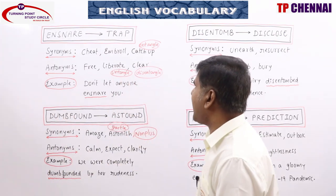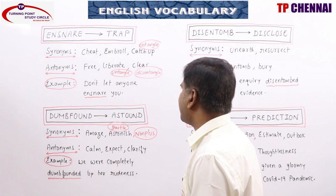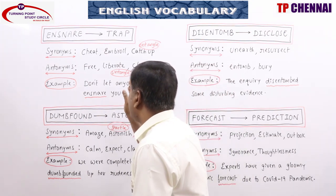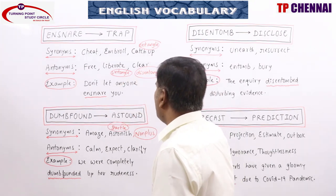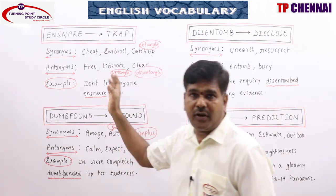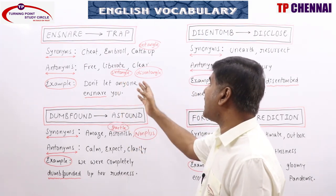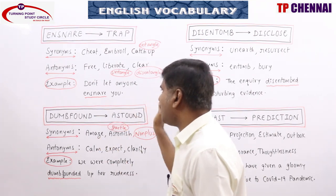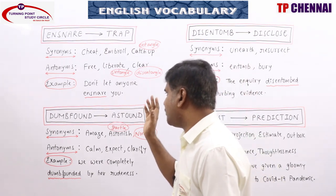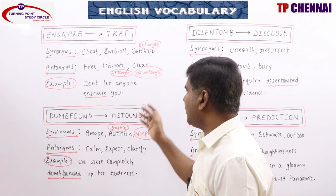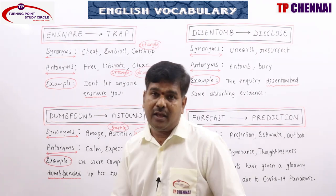Let's sum up. Ensnare means trap — to trap someone in an unpleasant or illegal situation, to catch or get control of something or someone, or to catch an animal in a trap. Synonyms: cheat, embroil, catch up, entangle, mesh, entail. Antonyms: free, liberate, clear, untangle, disentangle, extricate. Examples: Don't let anyone ensnare you. Spiders ensnare flies and other insects in their web.